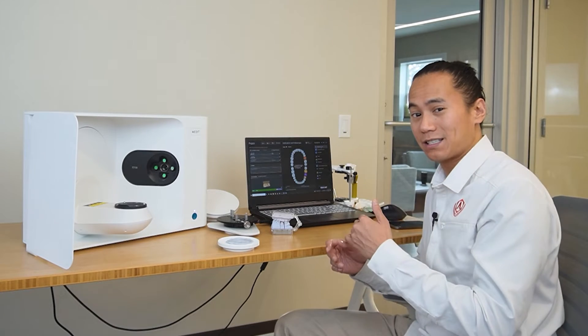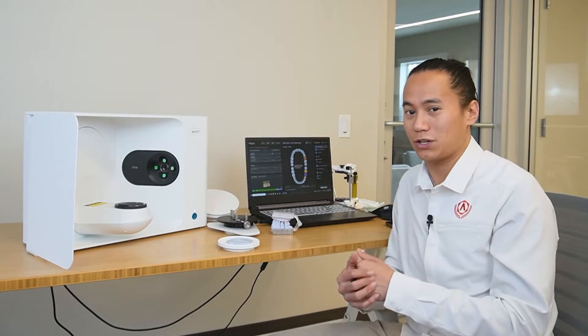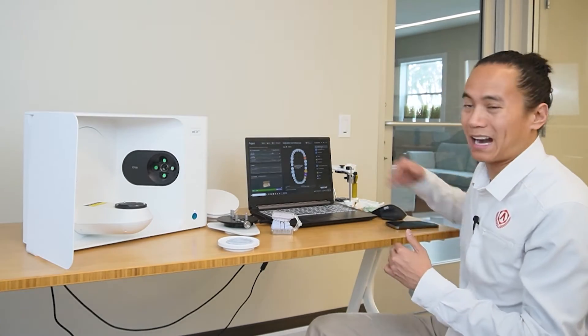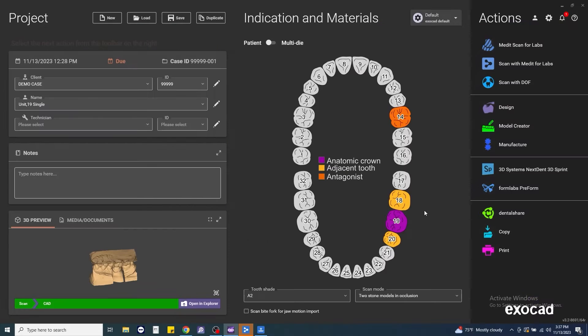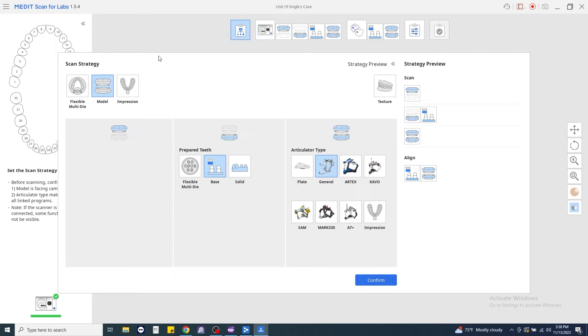ExoCAD automatically detects that the Medit Link application is installed on your computer. And it'll automatically give you that icon on the screen. So once we have the case set up here, we'll go ahead and click Medit Scan for Labs. So once we've had our case set up, we're going to go back here for Medit Scan for Labs and go through the scan strategy.